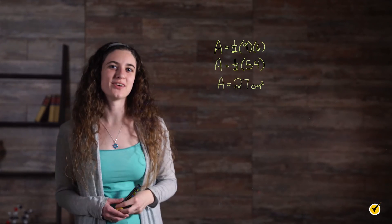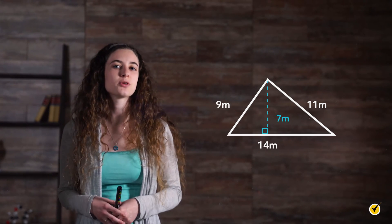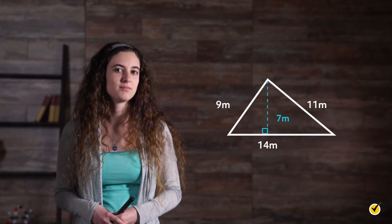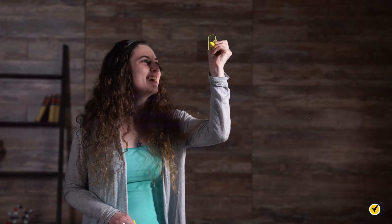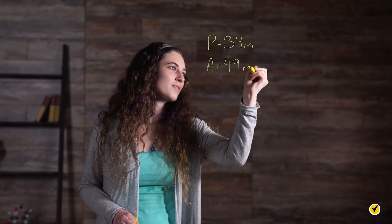That's all there is to it. Here's one more for you to solve on your own. Try pausing this video and then finding the perimeter and area of this triangle. Think you got it? The perimeter is 34 meters, and the area is 49 meters squared. Thanks for watching, and happy studying.